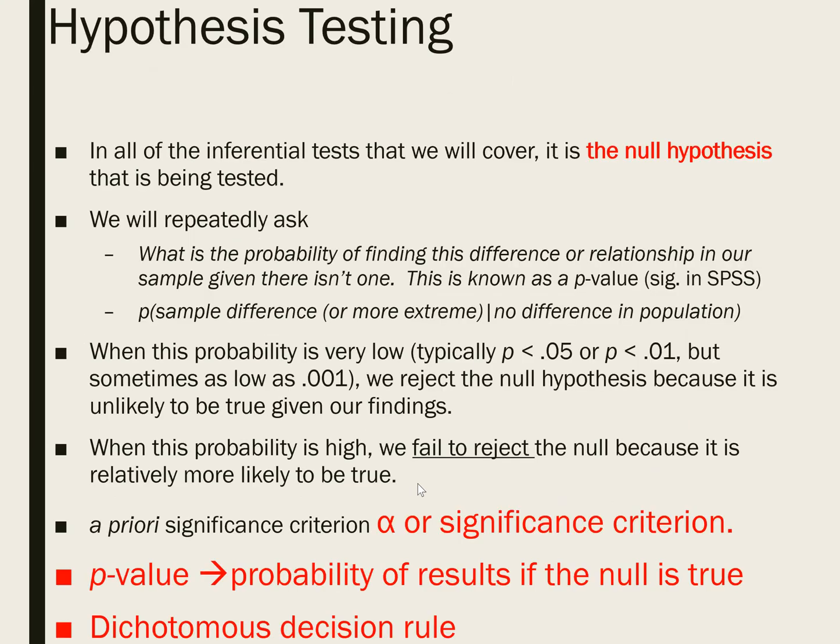In all of the inferential tests we'll cover in this course, it's basically the null hypothesis that is being tested — so we call it null hypothesis significance testing. What we're going to ask repeatedly is: what's the probability of the findings in the data, or the difference or the relationship in the data from our sample, if there really isn't one? We're asking what's the probability of what we found if, in the population, the null hypothesis is true — or more extreme — if there really is no difference or no relationship in the population. This probability is often called a p-value, and when it is very low — say less than 0.05 or less than 0.01 — we're going to reject the null.